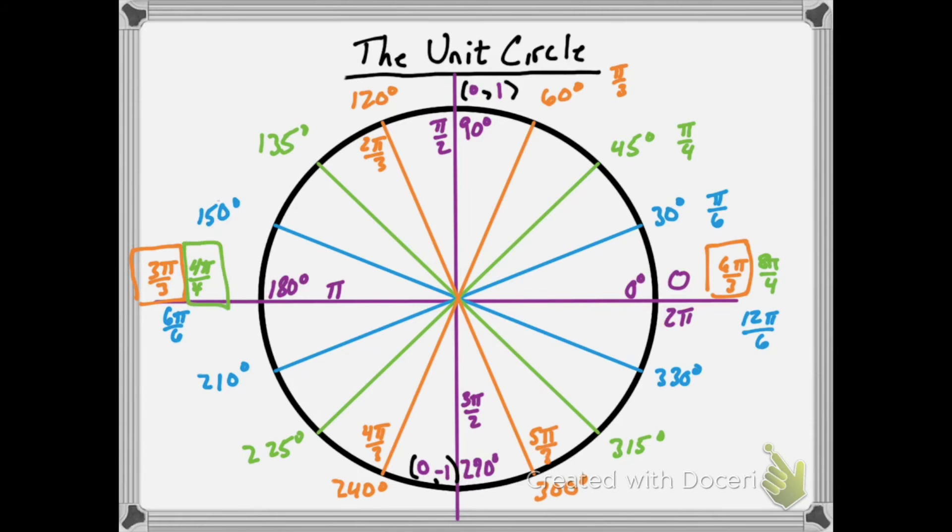It's the same trick for our green and blue angles. One less than 4 pi over 4 would be 3 pi over 4, one more would be 5 pi over 4. In the fourth quadrant, one less than 8 pi over 4 would be 7 pi over 4.